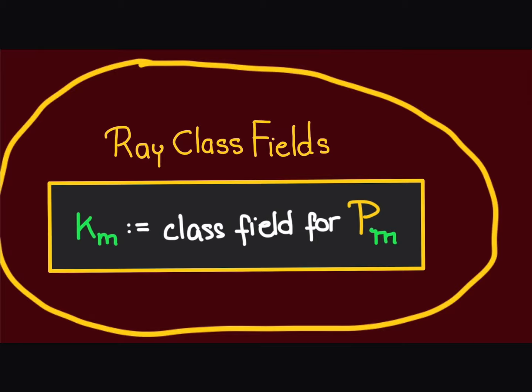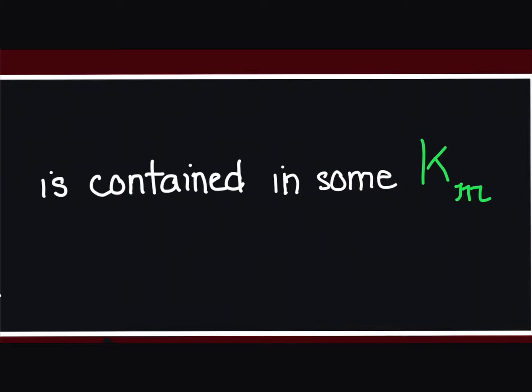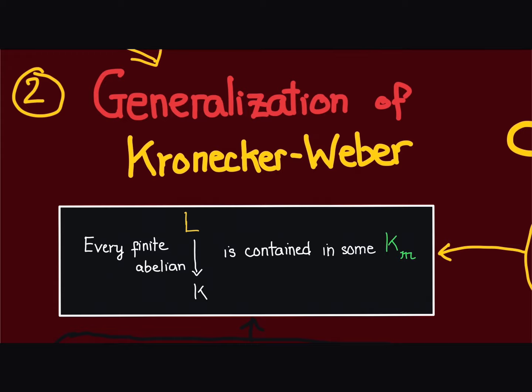Now, equipped with the concept of ray-class fields, we can generalize Kronecker-Weber. Given a number field k, we claim that every finite abelian extension of k is contained inside some ray-class field of k.